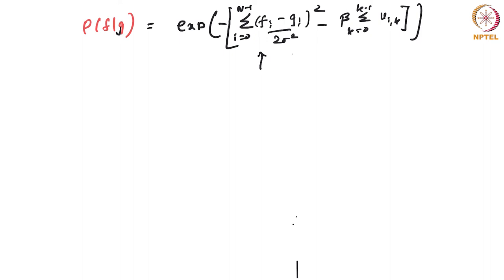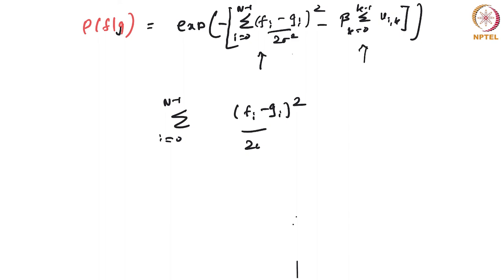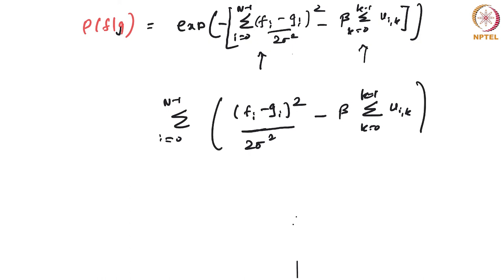We added the prior so that images can have very strong edges. The maximization of P(F|G) actually means minimization of the exponent: the sum from i=0 to n−1 of (Fi minus Gi)² / 2σ² minus beta times the clique term. This is the loss function we are trying to optimize.